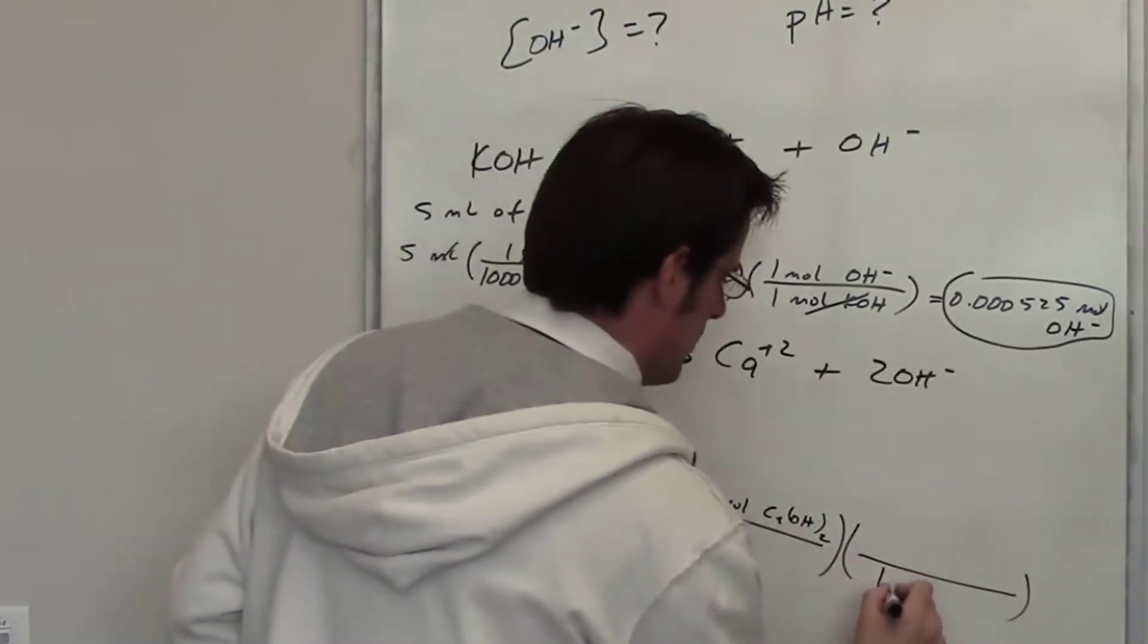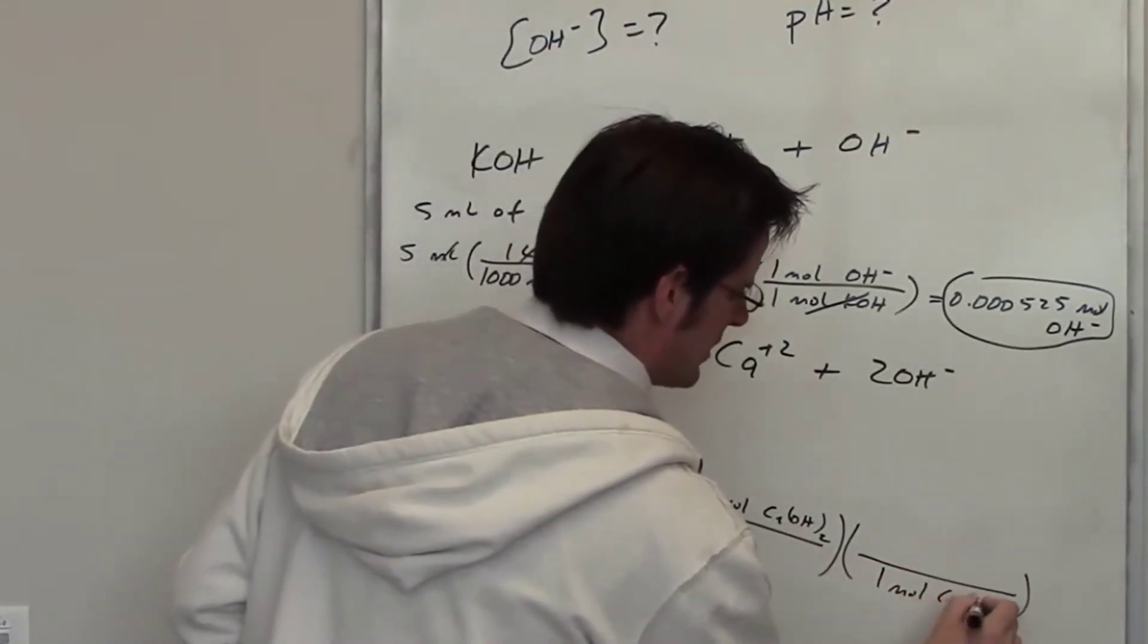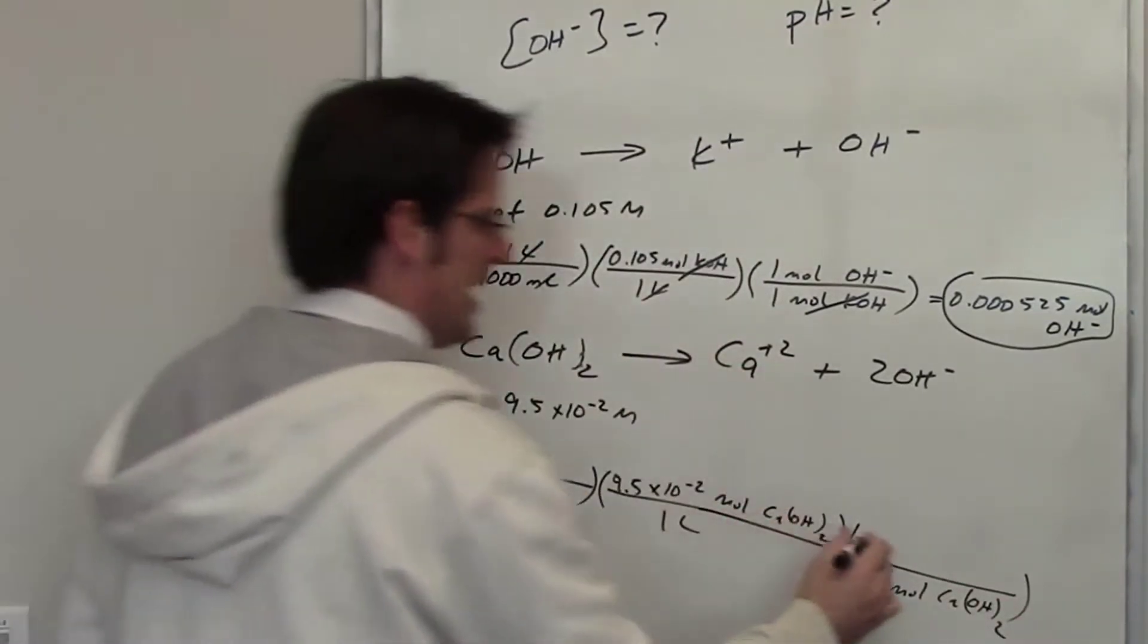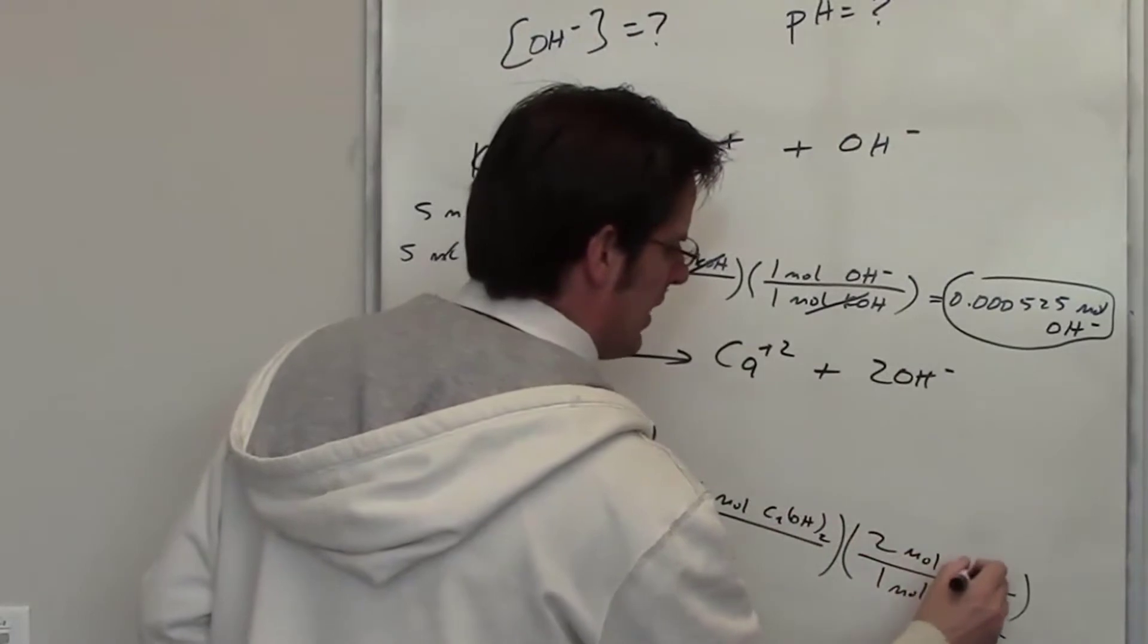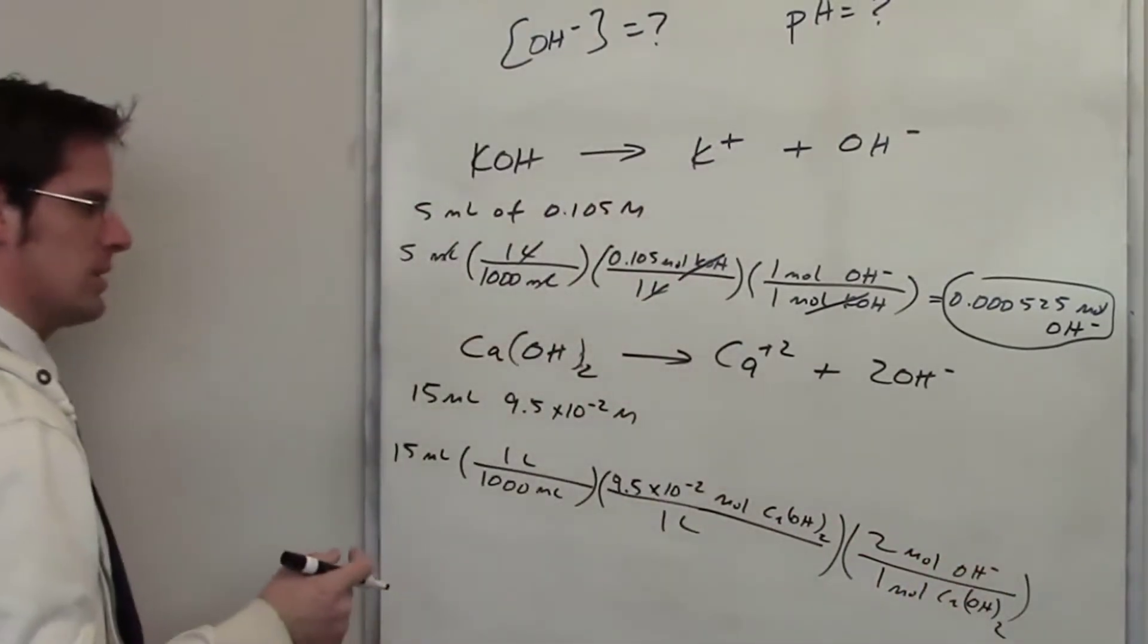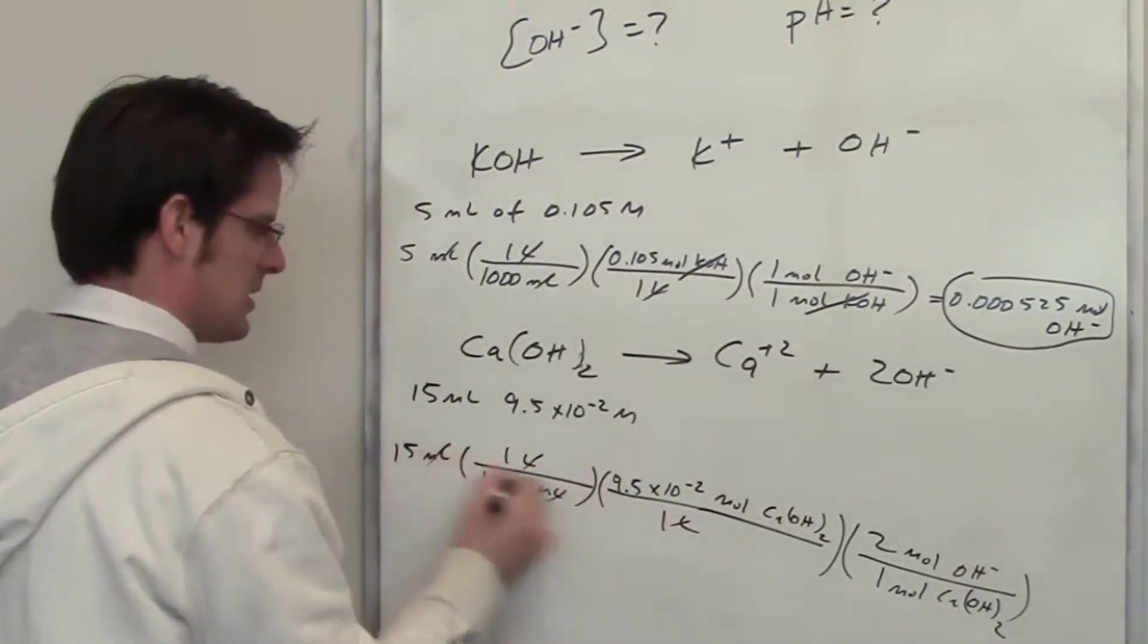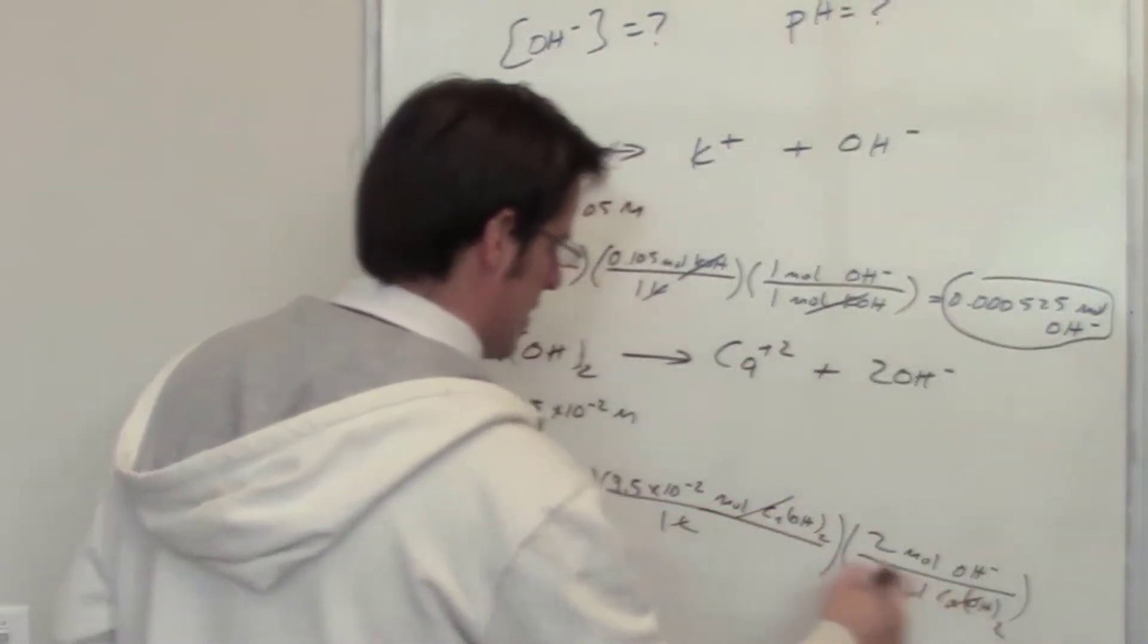Well, for every 1 mole of KOH that I have in this balanced stoichiometric equation, I have 2 moles of hydroxide getting spat out. So you can hopefully look at this and make sense of it. The liters cancel each other out, the mLs cancel each other out, the moles of calcium hydroxide cancel each other out.